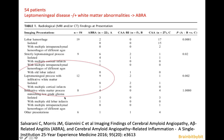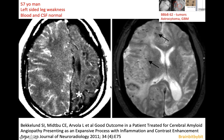A study published in 2016 looked at 54 patients with ABRA, CAA-related inflammation, and CAA. They found that leptomeningeal disease with or without white matter abnormalities is more in favor of ABRA. Importantly, ABRA responds better to steroids than primary angiitis of the central nervous system.